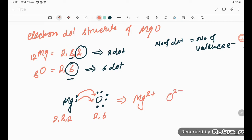Oxygen gains 2 electrons so 2 minus. What is the configuration after loss of 2 electrons? 2,8. And here after gain of electrons is 2,8. Both are having stable octet.